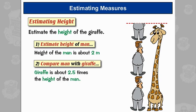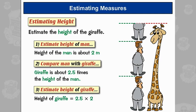Of course, when you're doing this on paper, you don't need to draw the man each time. Just put a mark where the top of his head would go. Like this. 1, 2, 2.5. So now we can estimate the height of the giraffe as 2.5 times 2, which is 5 metres.